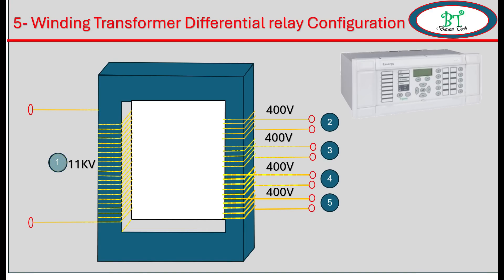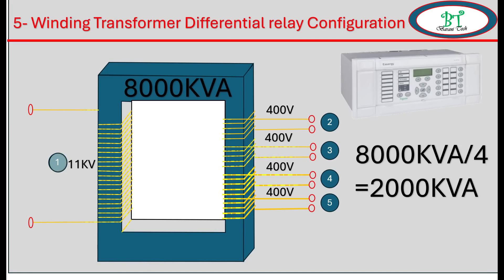The voltage is constant but the current is divided. For simple understanding: the transformer power is 8000 KVA with four secondary windings of equal voltage. We divide 8000 KVA by 4 to get 2000 KVA. Each winding on the LV side is capable of handling 2000 KVA.